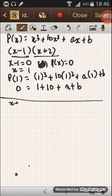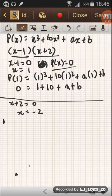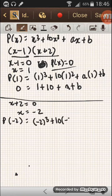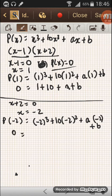Now x plus 2 will be equal to 0, x will be equal to minus 2. P(x) will be equal to 0, so putting the value of minus 2 here will be equal to minus 2 cube plus 10 into minus 2 square plus a into minus 2 plus b. So 0 will be equal to minus 8 plus 40 minus 2a plus b.